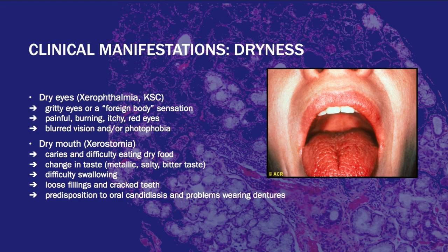The other presentation is dry mouth, or xerostomia, which can cause caries and difficulty eating dry food. It can also cause change in taste, difficulty swallowing, loose teeth, cracked teeth, and predisposition to candida. It also causes problems with wearing dentures. Many Sjögren's Syndrome patients end up needing dentures at an early age. In this picture, we see a patient with severe dryness which can cause a deep red tongue and fissures in the tongue.